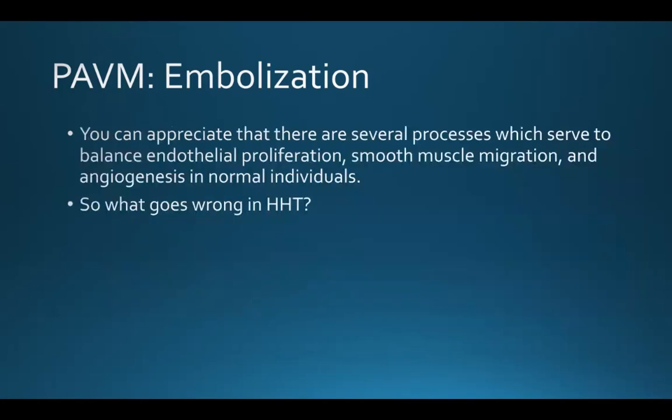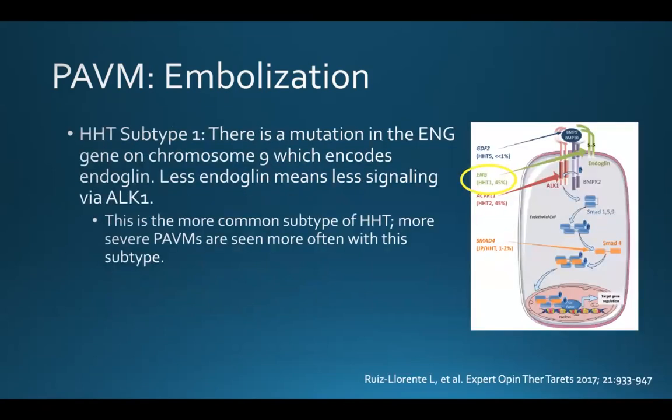There are several processes which serve to balance endothelial proliferation, smooth muscle migration, and angiogenesis in normal individuals. The question is what goes wrong in HHT, and the answer lies with the genetic mutations that have been discovered. In HHT subtype 1, there is a mutation in the ENG gene on chromosome 9, which encodes endoglin. Less endoglin means less signaling via ALK1. This is the more common subtype of HHT, and more severe pulmonary AVMs are seen more often with this subtype.